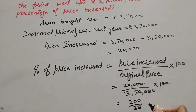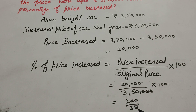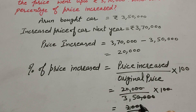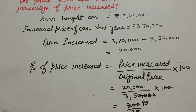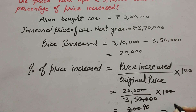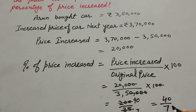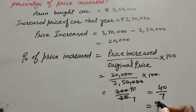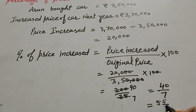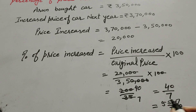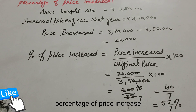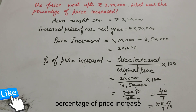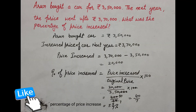200 and 35 are both divisible by 5, so we cancel them: 5 times 40 is 200 and 5 times 7 is 35. So it equals 40 over 7. 40 divided by 7 gives the answer 5 and 5 over 7 percent. The percentage increase in the price of the car is 5 5/7 percent.